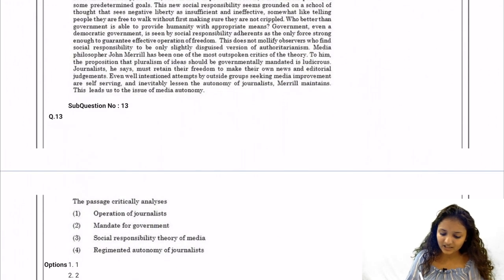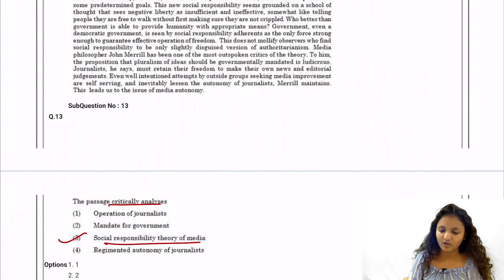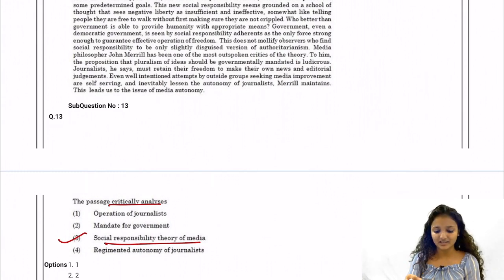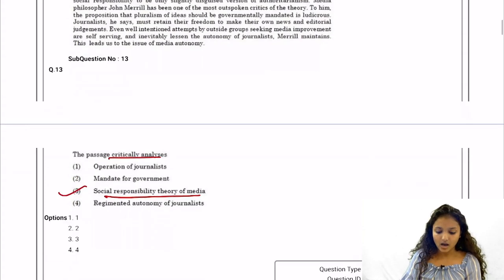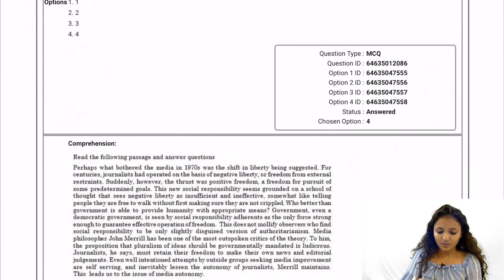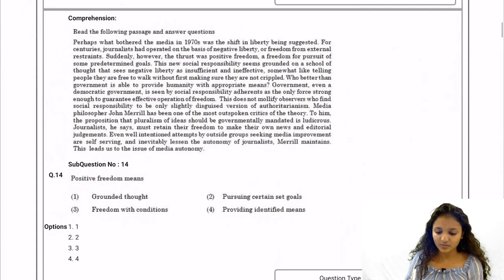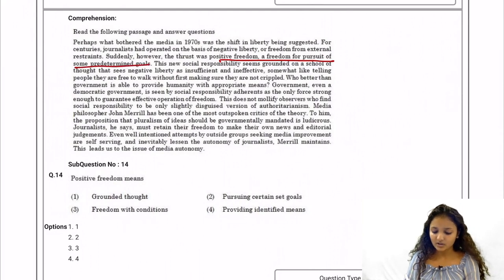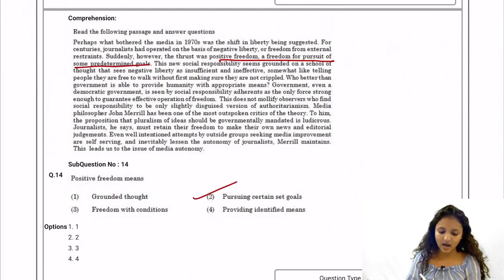Question 13: The passage critically analyzes the social responsibility theory of media — throughout this passage, only the social responsibility theory of media has been discussed and critically analyzed. Question 14: Positive freedom means pursuing certain set goals, so option number two is the correct answer.